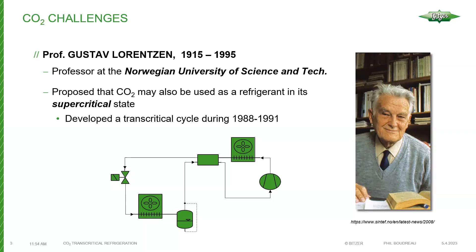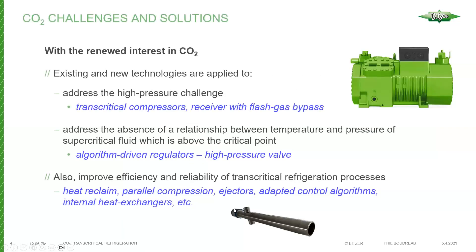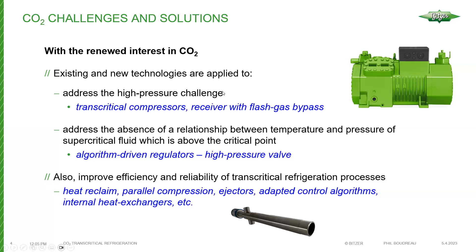When we're above that critical point, the actual state of the refrigerant is supercritical. Professor Lorenzen developed a transcritical cycle during 1988 to 1991. CO2 was used quite a bit in the 1800s up to 1950, then kind of disappeared when CFCs and HFCs took over. With ODP reductions and now regulations on refrigerants with high global warming potential, CO2 has really made a comeback, along with other natural refrigerants such as ammonia and hydrocarbons like propane.